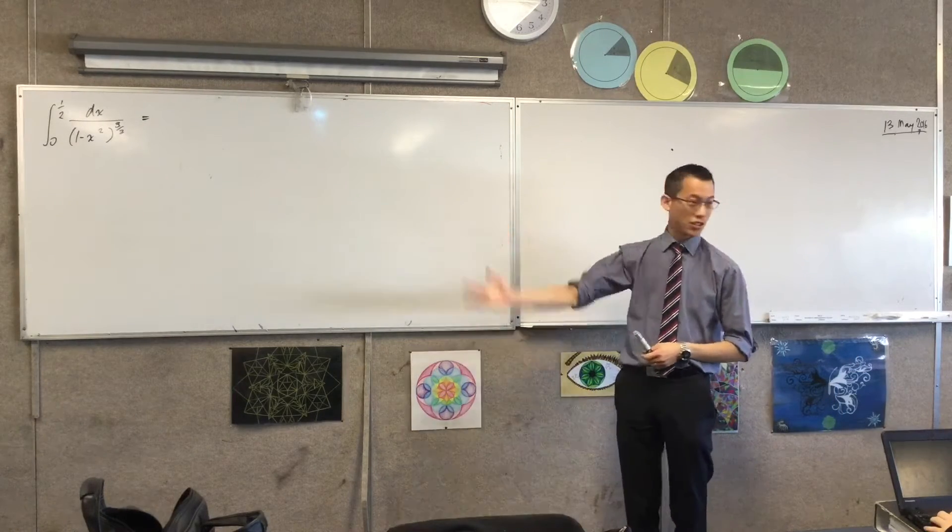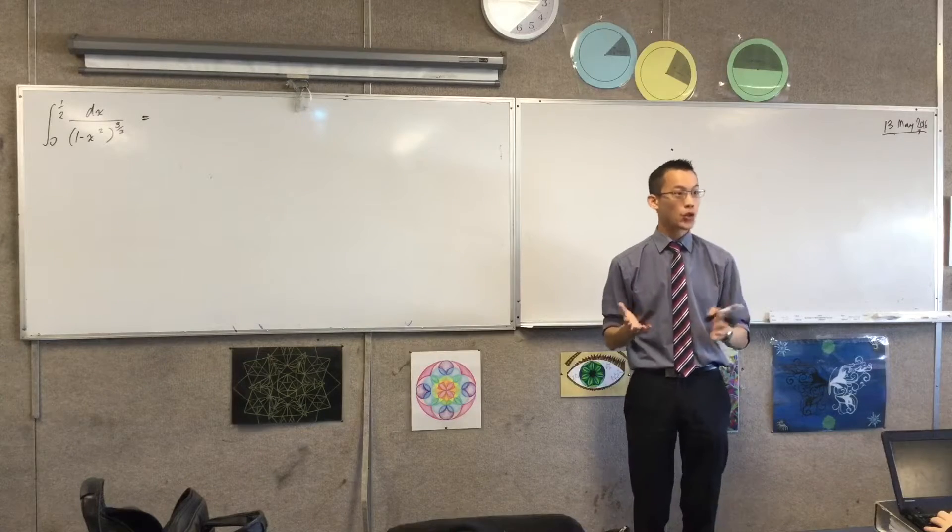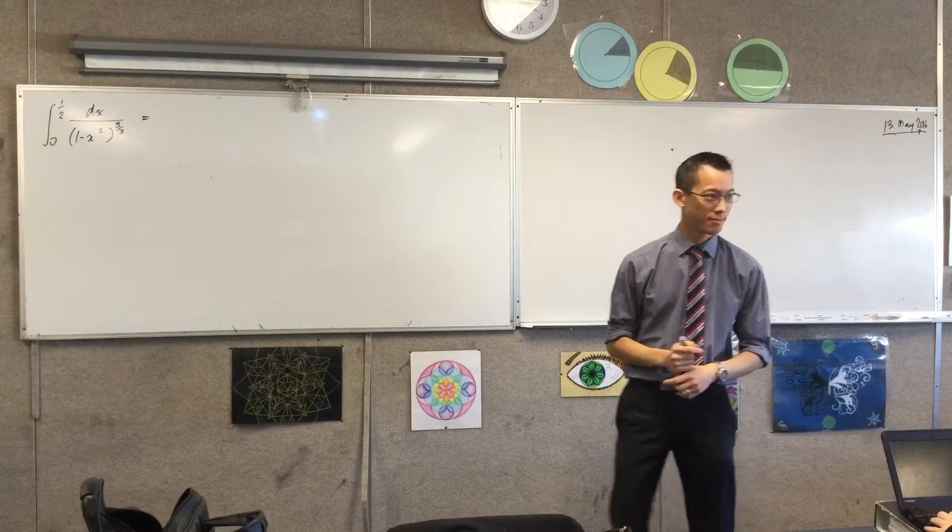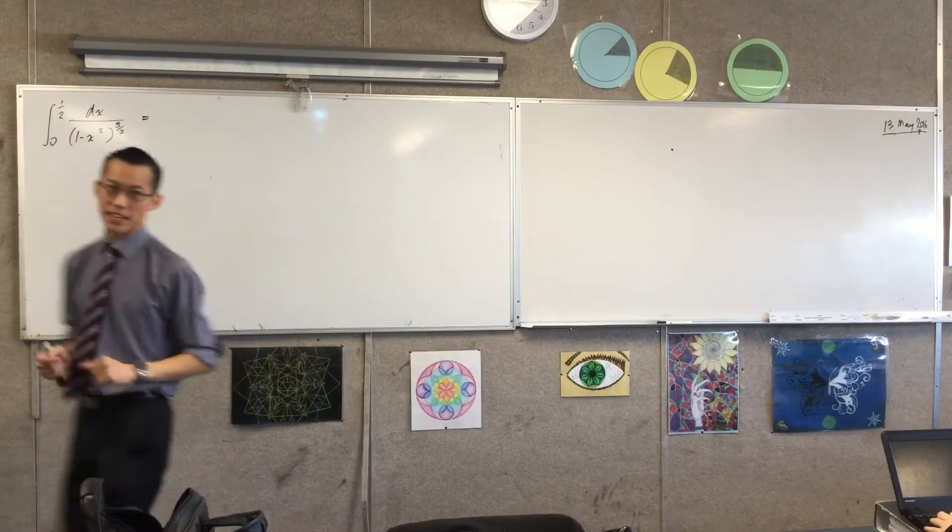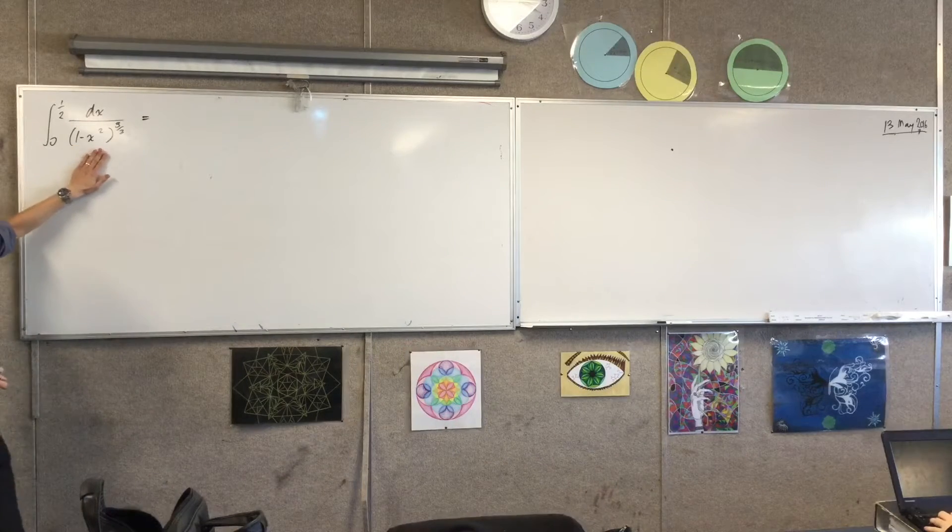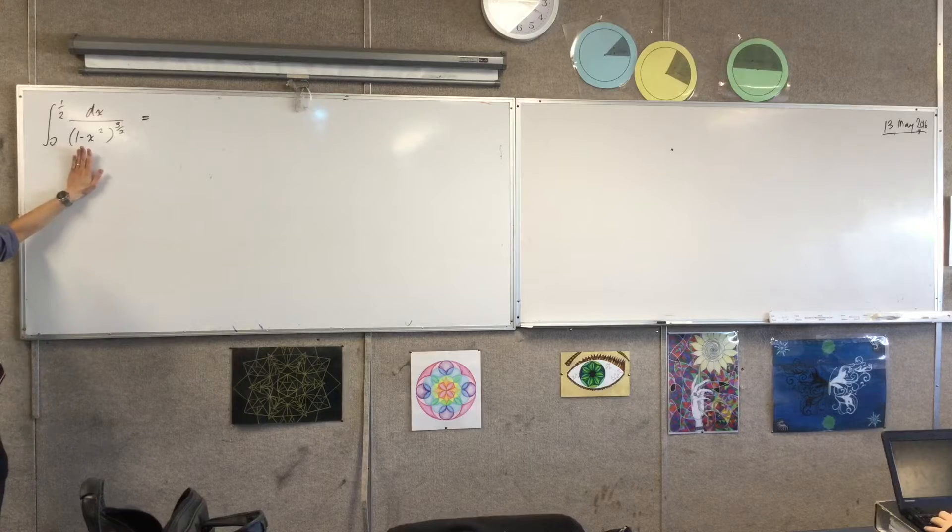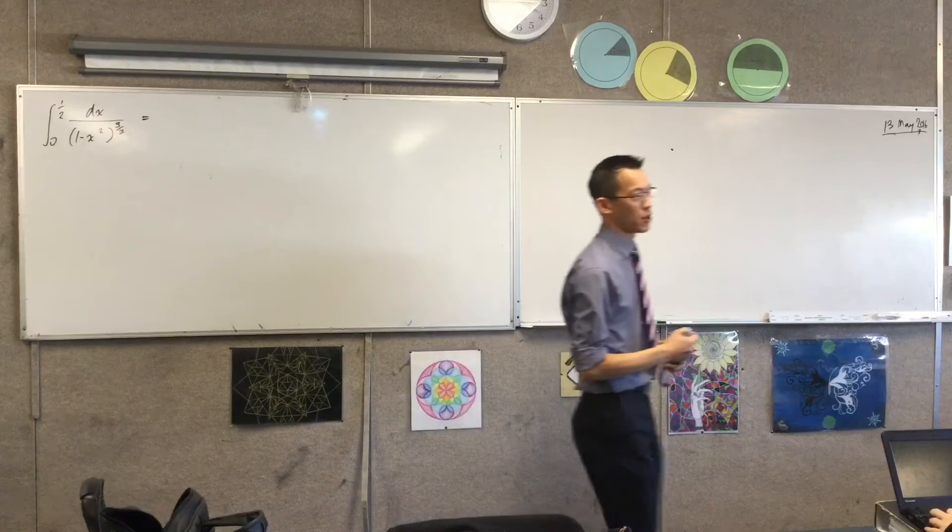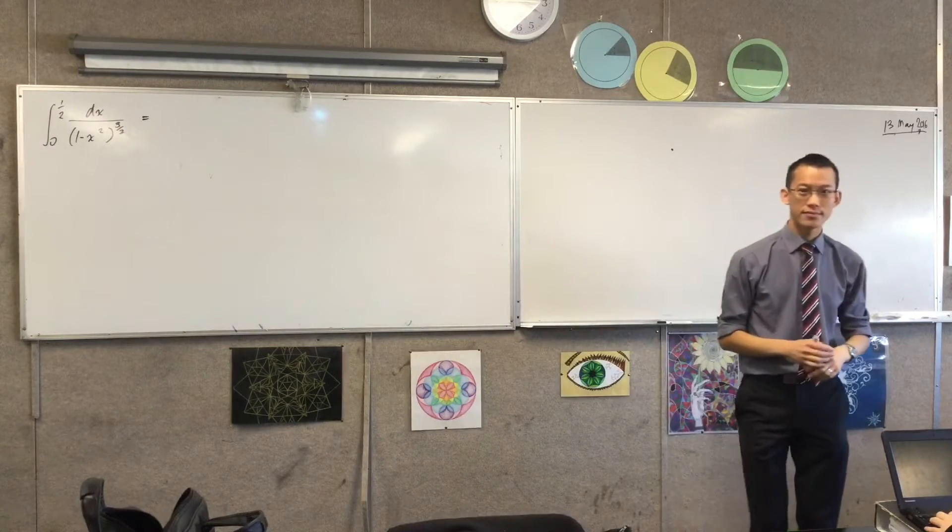But there is another part of the question that is actually not unusual at all. It's completely standard. Which part is it? 1 minus x squared. Yeah, it's 1 minus x squared. We see this all the time, and in fact, this is as easy as it gets, really. This is screaming at you, use a substitution. What substitution is going to be the most obvious one? You can choose 1 minus x squared.